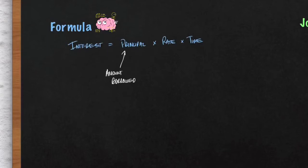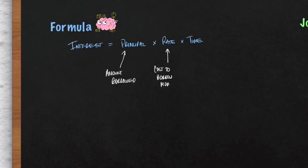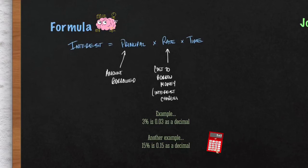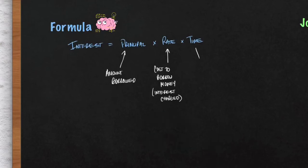The rate is the cost to borrow that money — in other words, it's the interest they charged you to borrow that money for a certain amount of time. Usually it's expressed as a percentage, so you may want to convert that percentage into a decimal before entering it into your calculator.